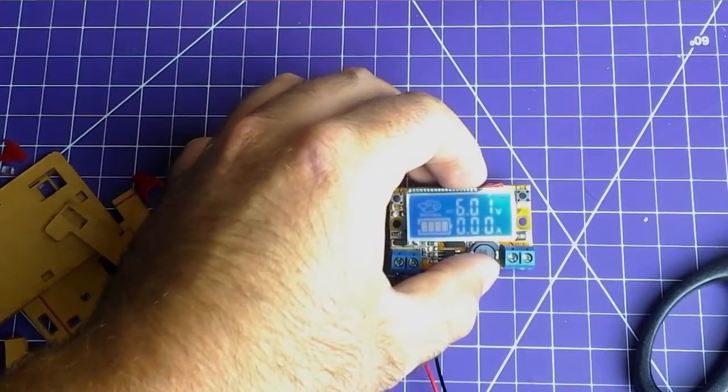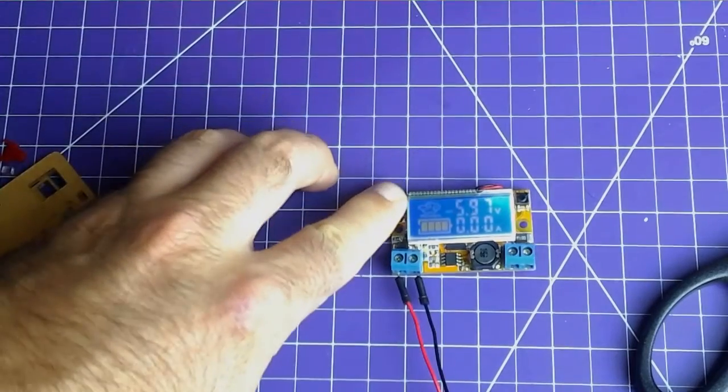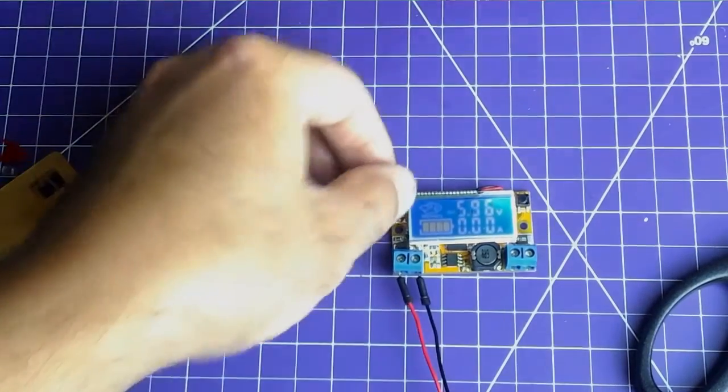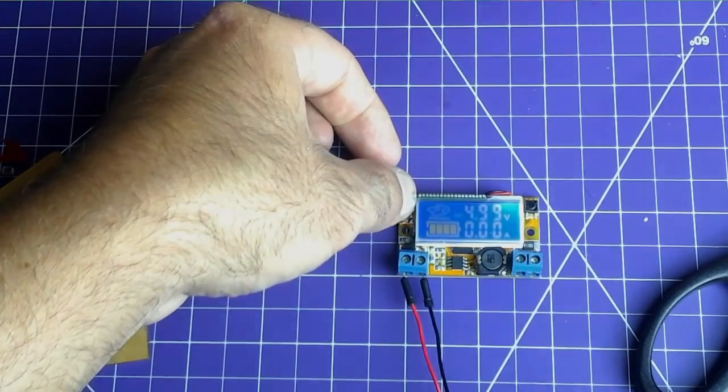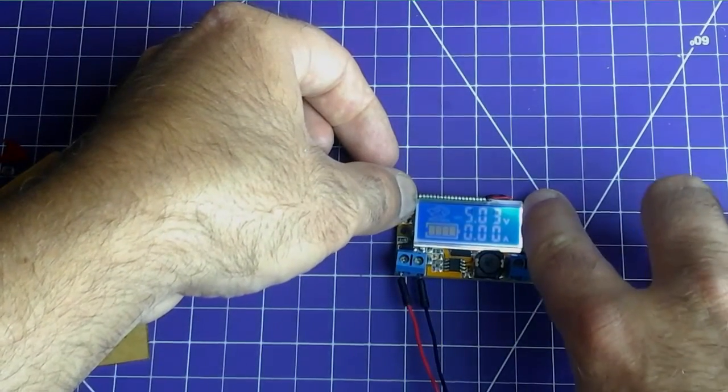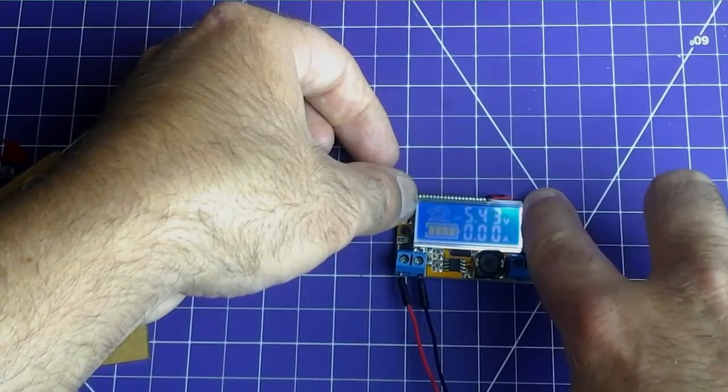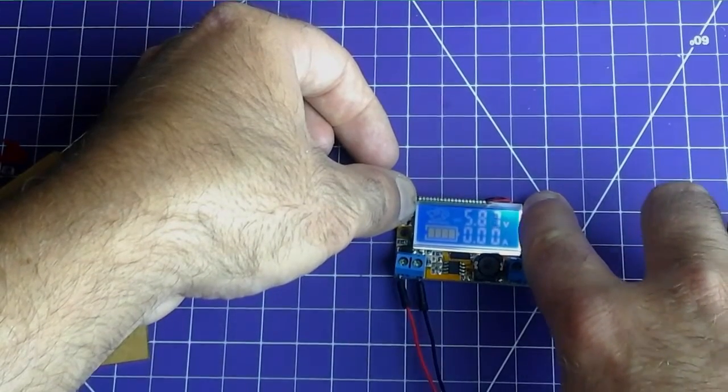Display's pretty bright. Set to 6 volts. Should be able to lower the voltage. Oh yeah. And increase it. Seems to be working.